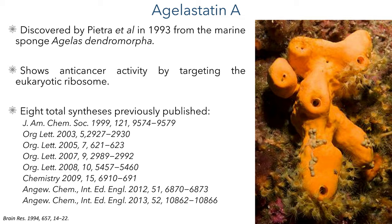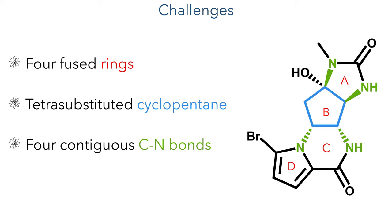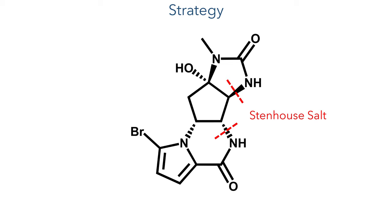The structure presents several challenges for synthesis, as it has four fused rings with a central tetrasubstituted cyclopentane ring. This cyclopentane has four contiguous carbon-nitrogen bonds, all of which must be introduced stereoselectively. The strategy the researchers would use involves the formation of a Stenhouse salt that would introduce the 1,2-trans-diamine motif.